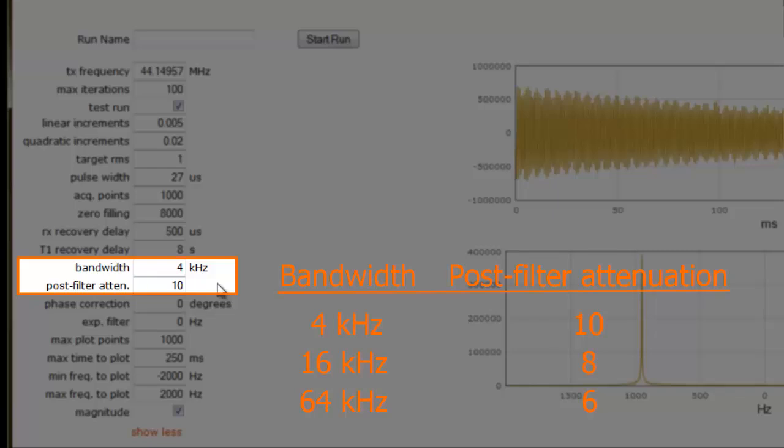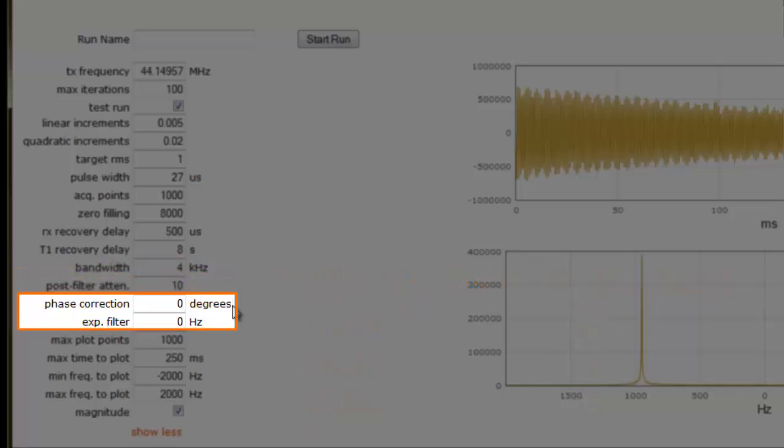As we saw in the zoom search video, when changing the bandwidth, one must also change the associated post-filter attenuation setting. The phase correction and exponential filter parameter fields are set to zero. We don't use either of these parameters for shimming.